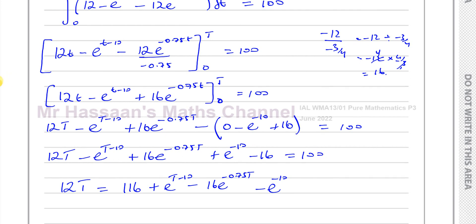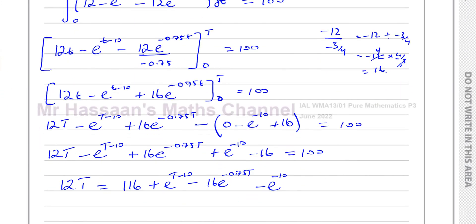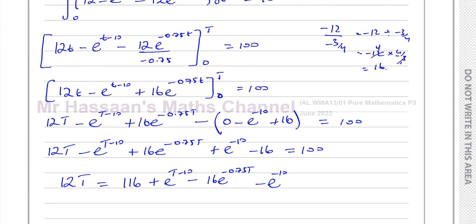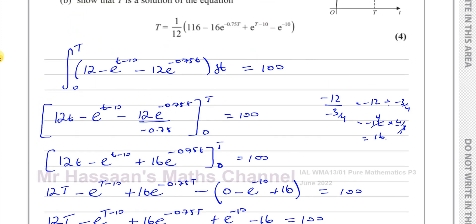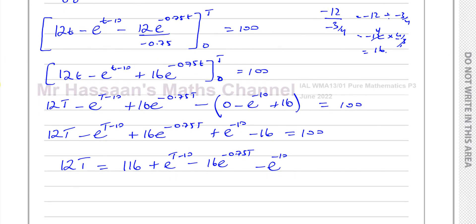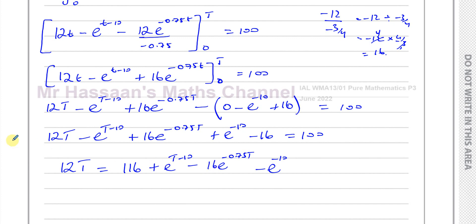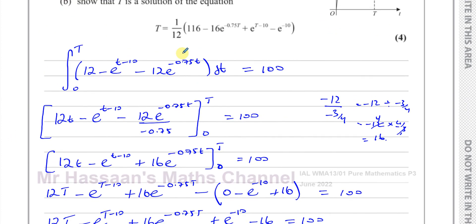So now I've got to write T as a subject. We can see that it's almost the same apart from I've written these the other way around. If you look at what we've got to do, we've got the 116, we got e to the power of t minus 10 minus 16e to power. It's the same thing.